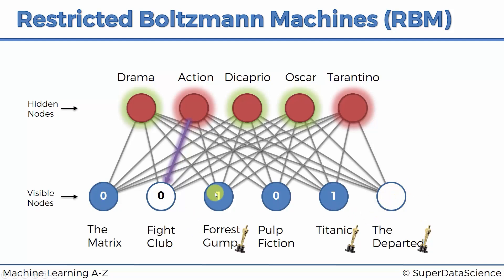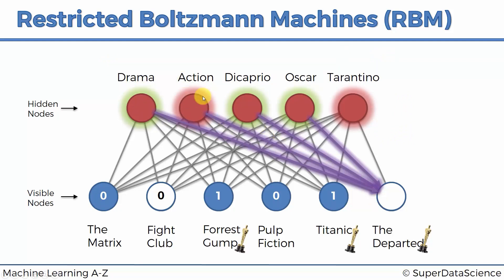Now for The Departed: the RBM checks its node connections. The Departed is connected to the drama node (green), the action node (red), the DiCaprio node (green), and the Oscar node (green). It is not strongly connected to the Tarantino node. Three nodes vote yes, one votes no — so the overall answer is yes, this user is most likely going to enjoy The Departed. That's the RBM recommender system in action.